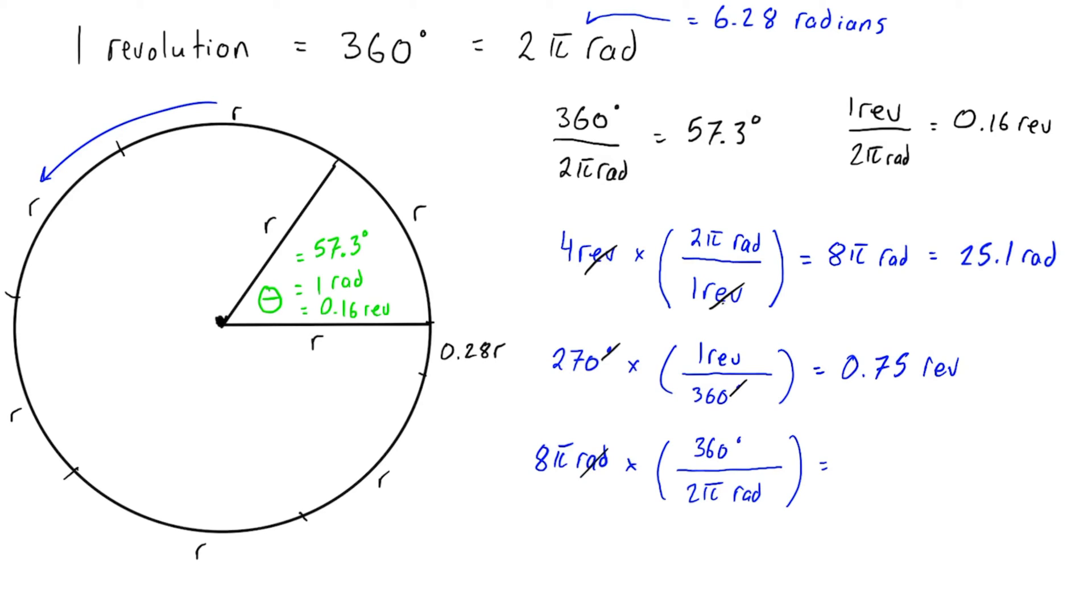The radians are going to cancel out. We can keep this kind of clean—π will cancel out with that π—so really we have 8 times 360 over 2, and that's going to give us 1440 degrees, which is the equivalent value.